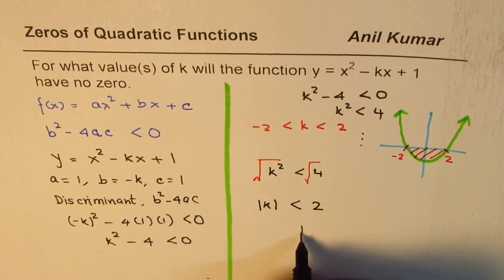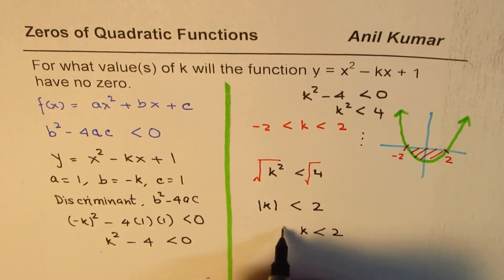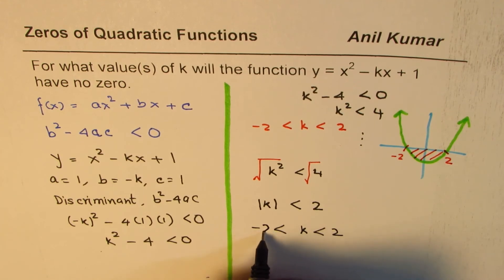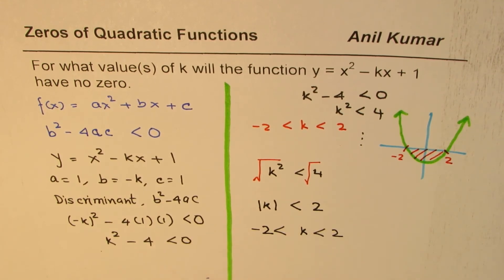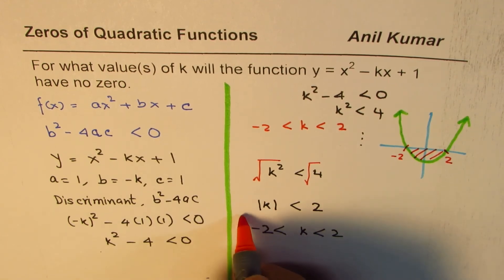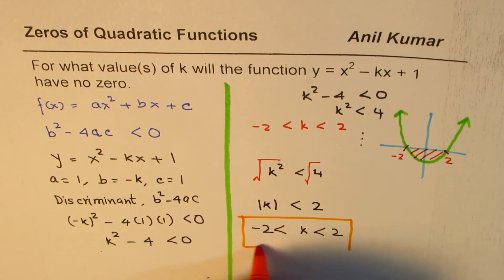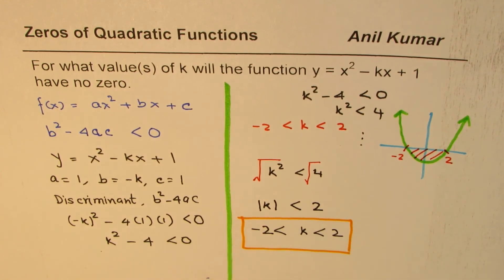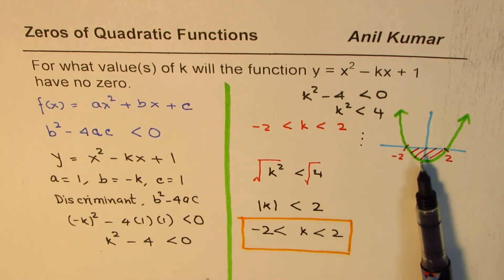This is a very important concept: square root of k² is absolute k, not k, and that is the reason why I've taken this up. I hope that helps you to understand the concept algebraically and also graphically.